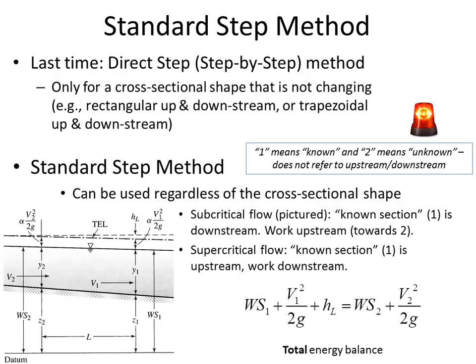In the direct step method, we were looking at specific energy E — energy balanced above the channel bottom. In the standard step method, this is a total energy balance. We look at Z, measuring the water surface elevation WS above a horizontal datum. So WS2 equals Y2 plus Z2, where Z2 is the elevation of the channel invert above the datum. This is a total energy balance method.